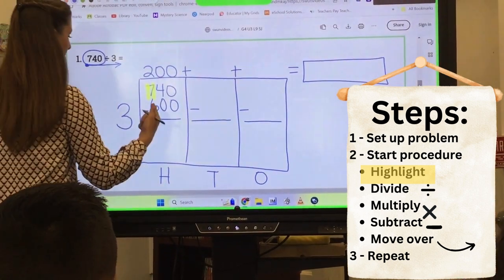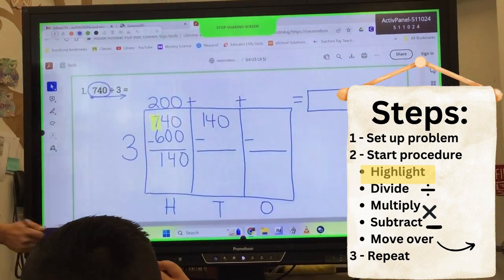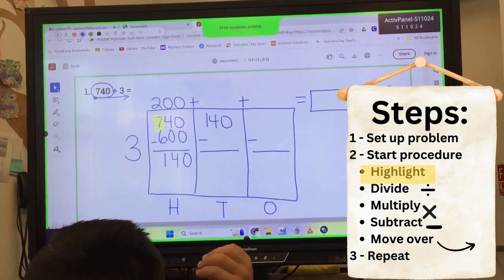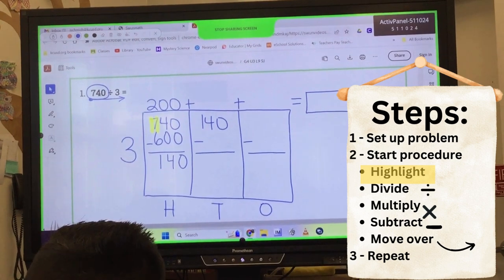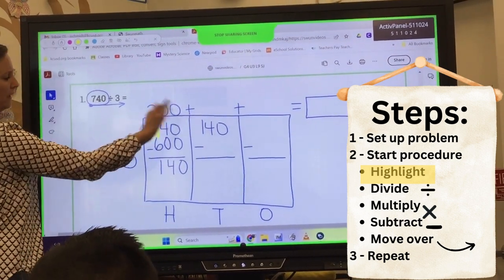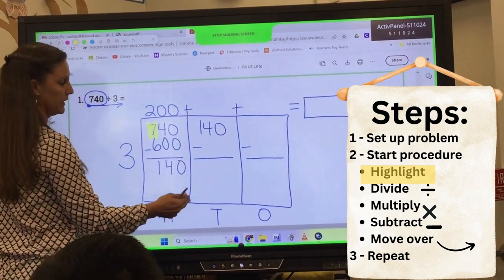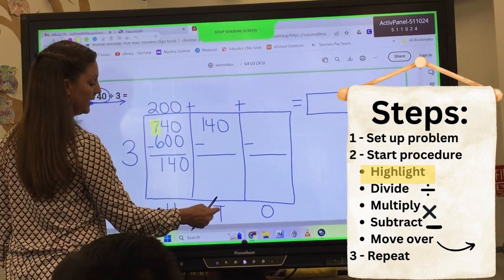We divided, we multiplied, now we're going to subtract, right? We subtract it and I have to start again. Okay, highlight, divide, multiply, subtract, move over. Okay, so I'm going to grab my highlighter. Okay, I'm like, oh, what do I highlight? Oh, the tens place.